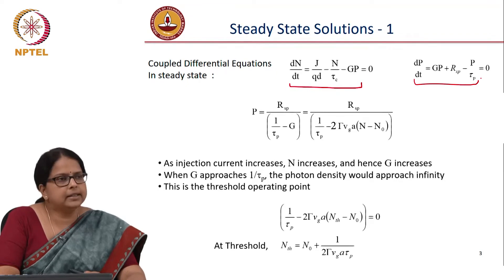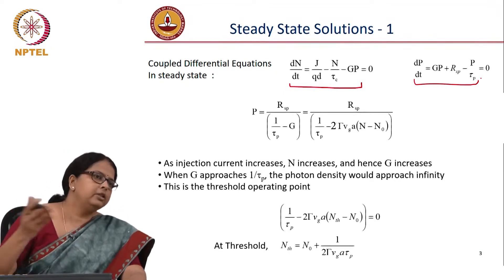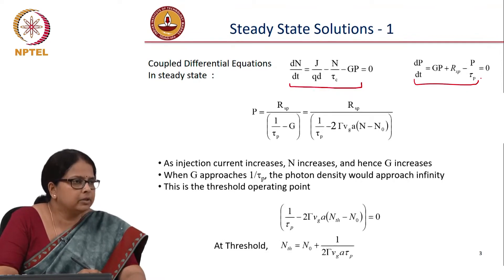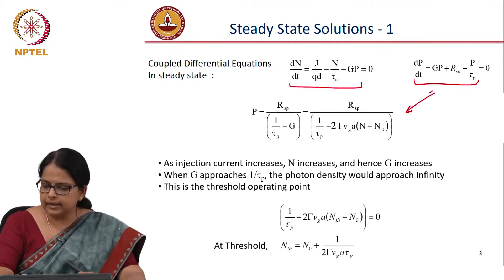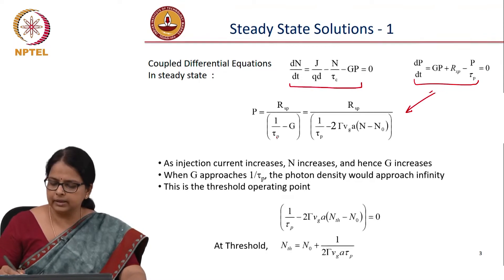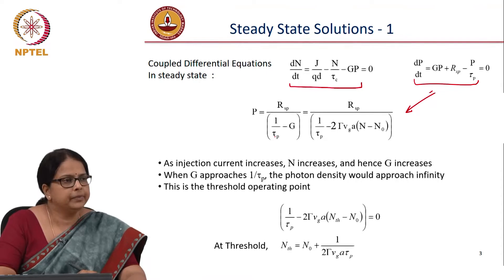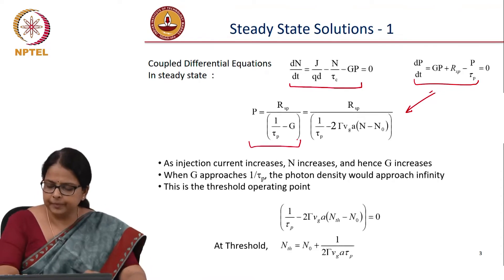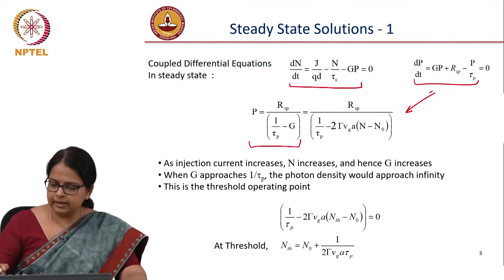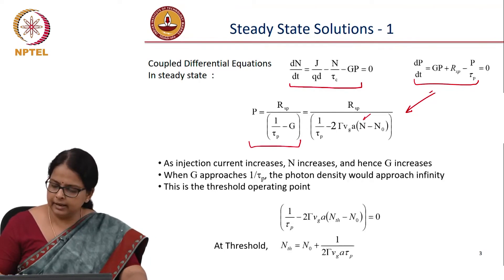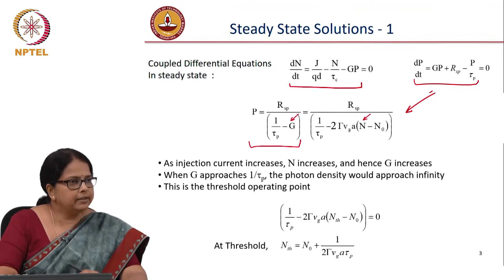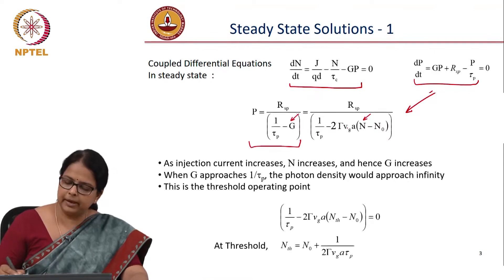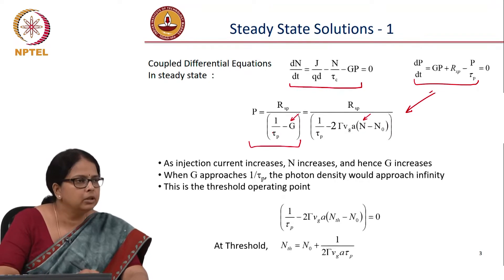In steady state there should not be a continuous change, so dP/dt must be equal to 0 and dN/dt must be equal to 0. The dP/dt equation, when set equal to 0, gives us RSP divided by (1/τp − g). As injection current increases, j increases, n increases, and when n increases, g increases. As g increases, there could be an injection current for which g becomes equal to 1/τp.